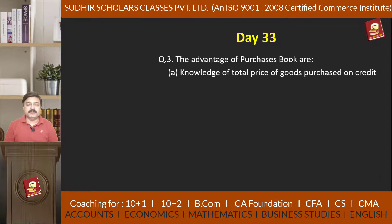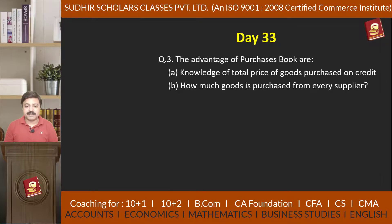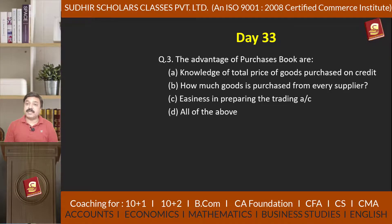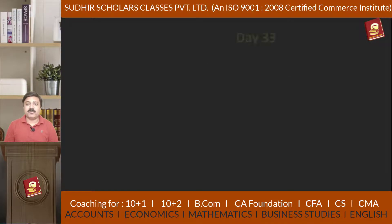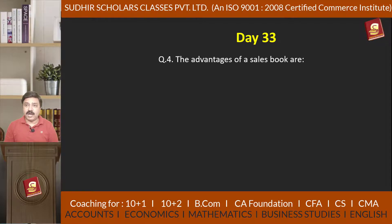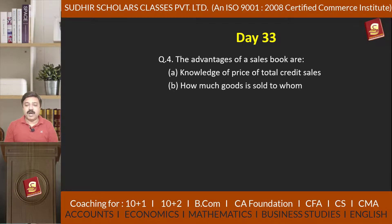Option B: how much goods is purchased from every supplier, Option C: easiness in preparing the trading account, Option D: all of the above. Question number 4: The advantages of sales book are — Option A: knowledge of price of total credit sale, Option B: how much goods is sold to whom, Option C: easiness in preparing the trading account.